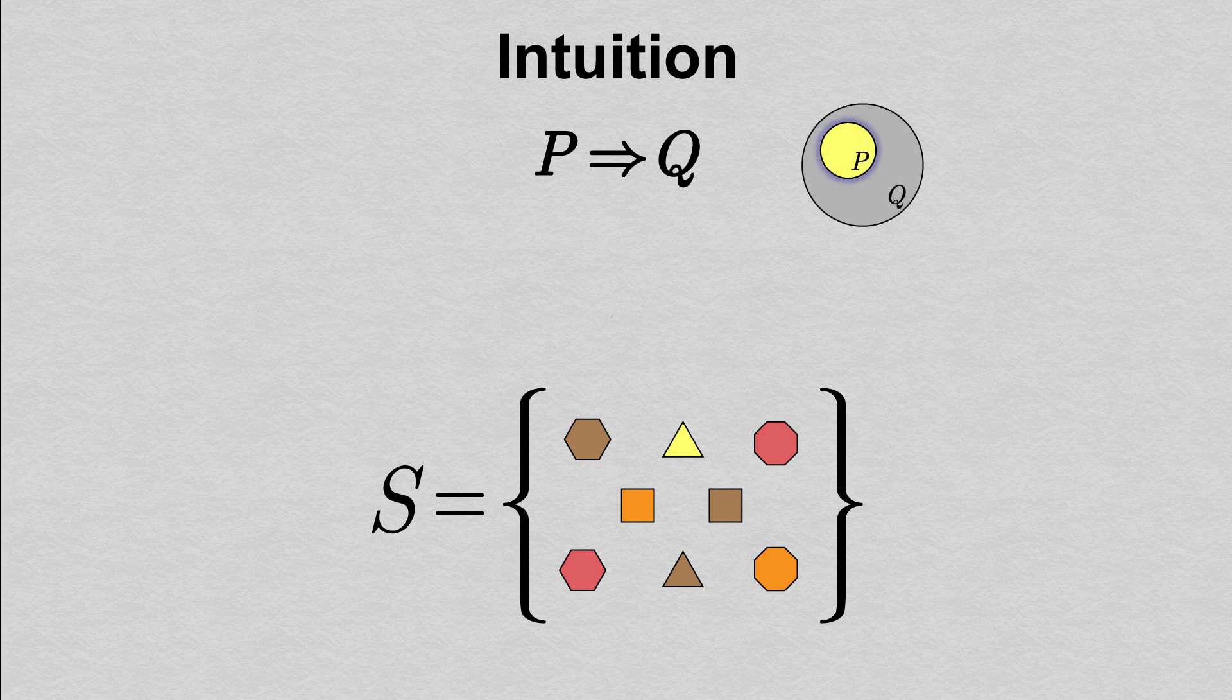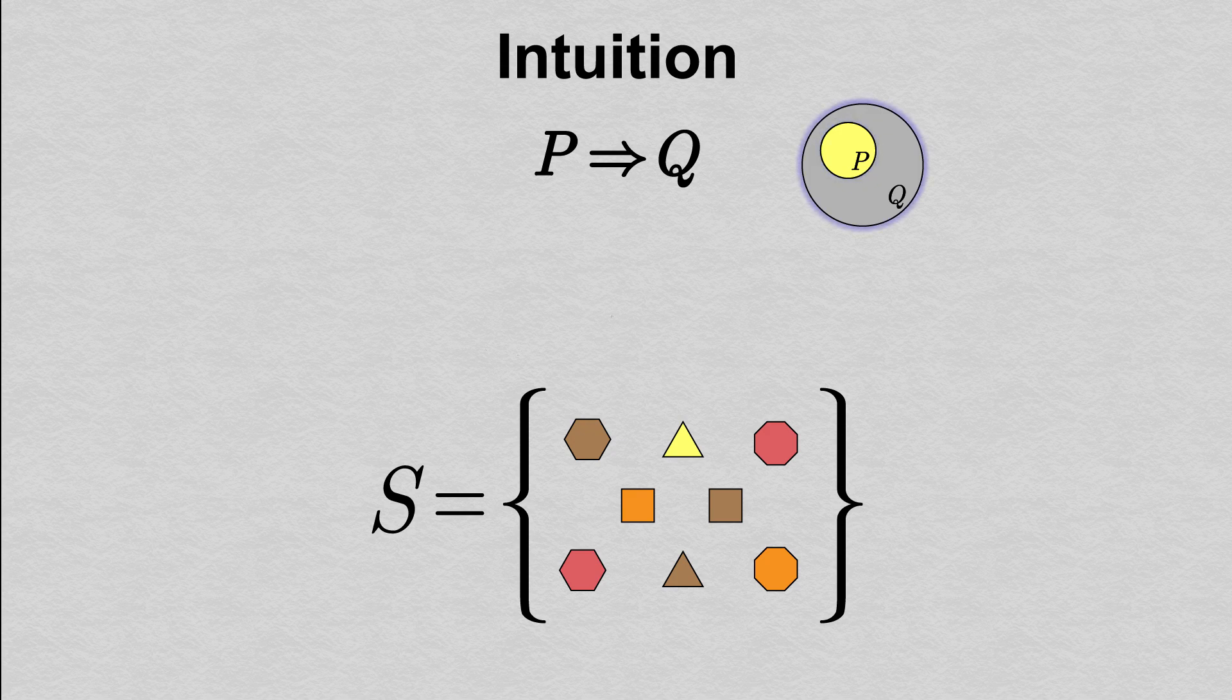We think of P being true just when we're inside the yellow disk, and Q being true just when we're inside the gray disk. The statement that P implies Q means that if we're in the yellow disk, we must also be in the gray disk. In other words, the yellow disk for P lies entirely inside the gray disk for Q.